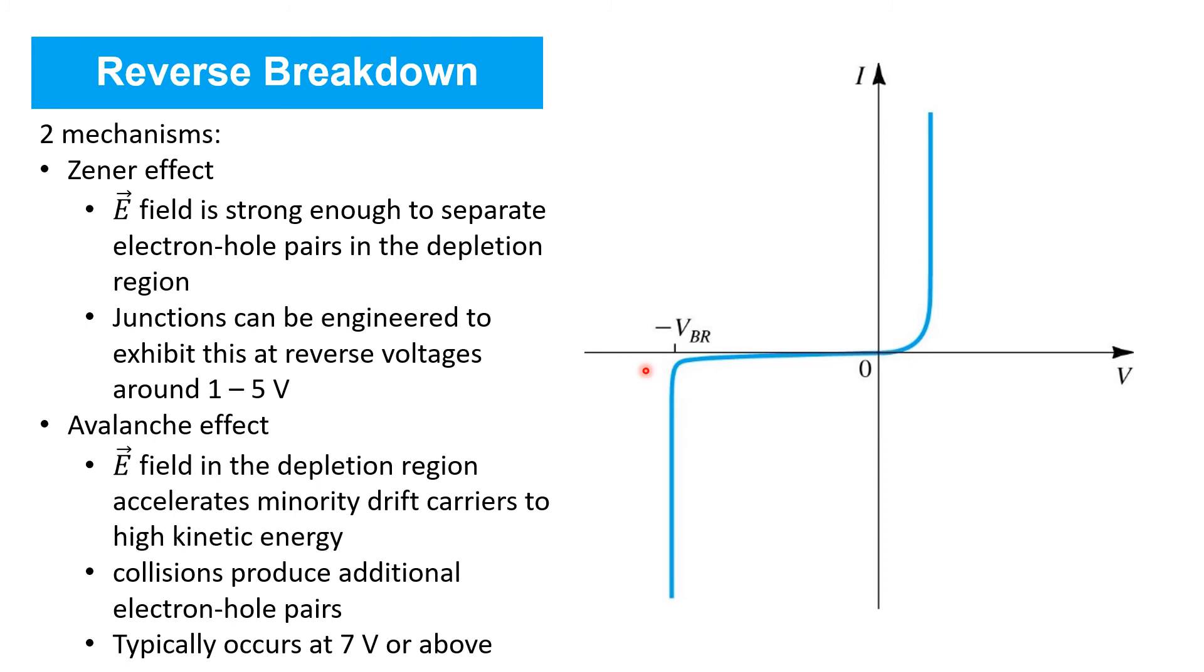Junctions can be engineered to exhibit the Zener effect at practically whatever voltage is desired. Typical values may range from one to five volts, but higher voltages are also common.